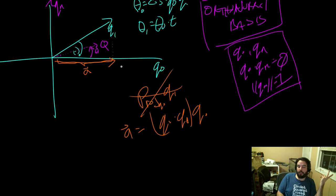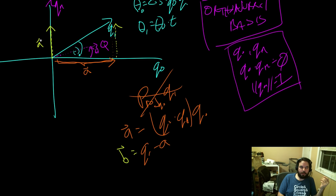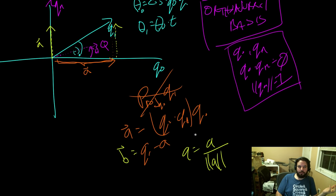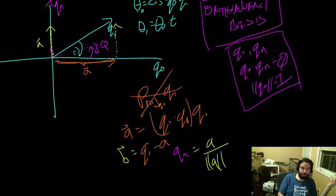So we have A. If we take q1 and subtract A from it, we get vector B = q1 - A. If we draw it at standard position, that's this vector here. Then Qn = A / |A|. We now have our ortho-normal basis. That's it — that's all there is to it.